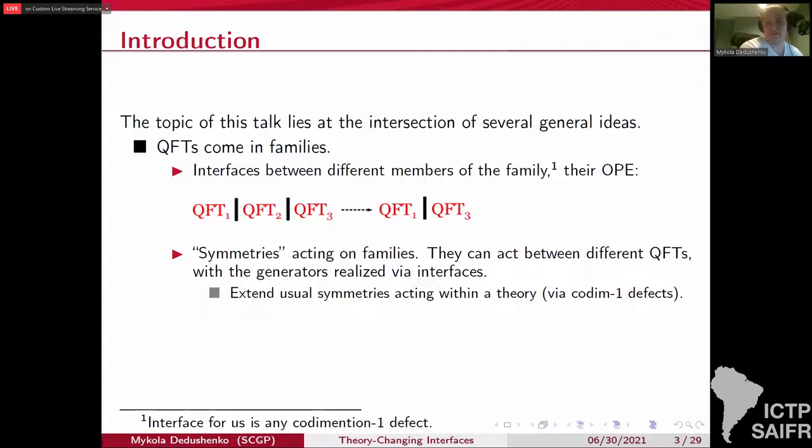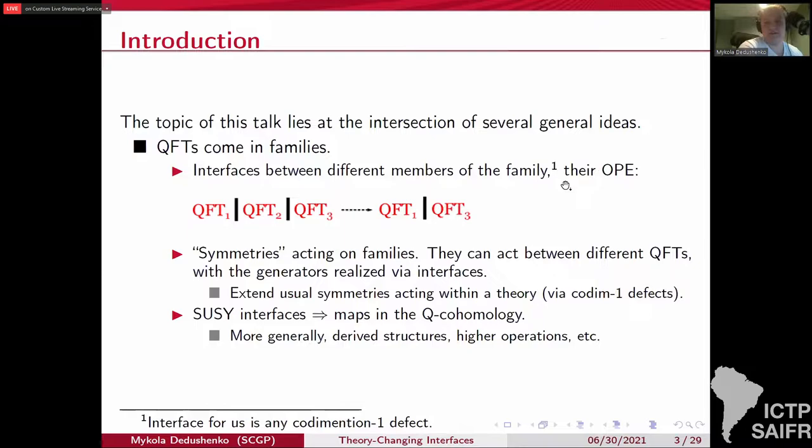They can act between different theories with generators realized by interfaces that would extend the usual notion of symmetries that act within one theory. The interface for us is any codimension-1 defect. And in my case, I don't assume them to be topological. And if those interfaces preserve some supersymmetry, they lead to interesting structures in the Cuko homology.